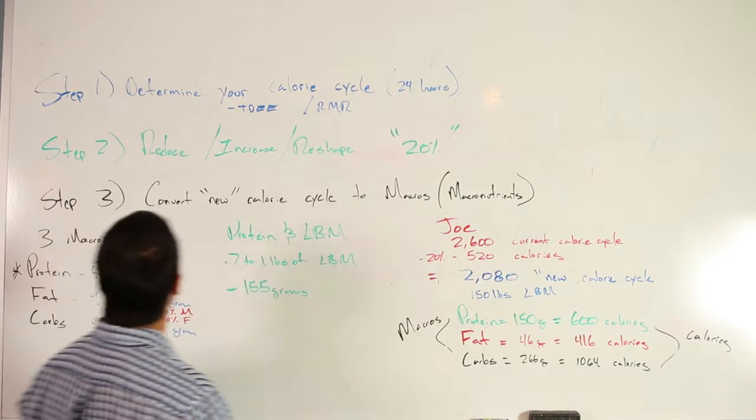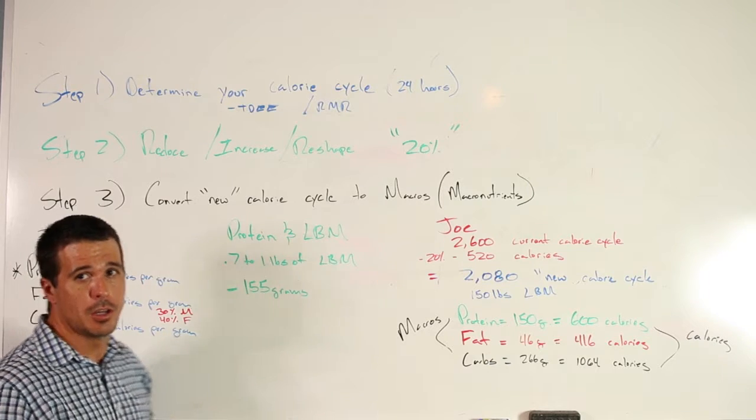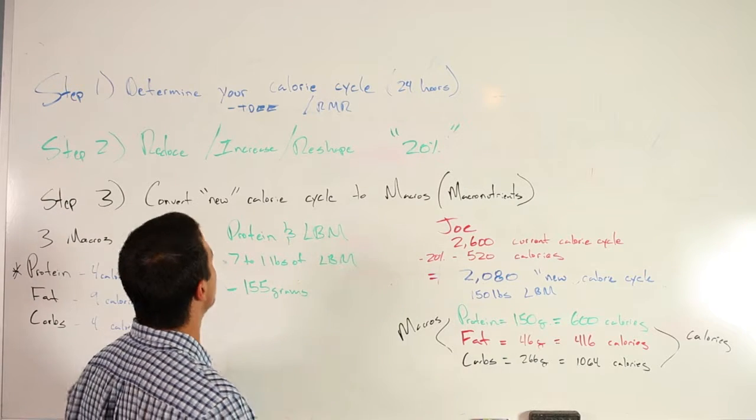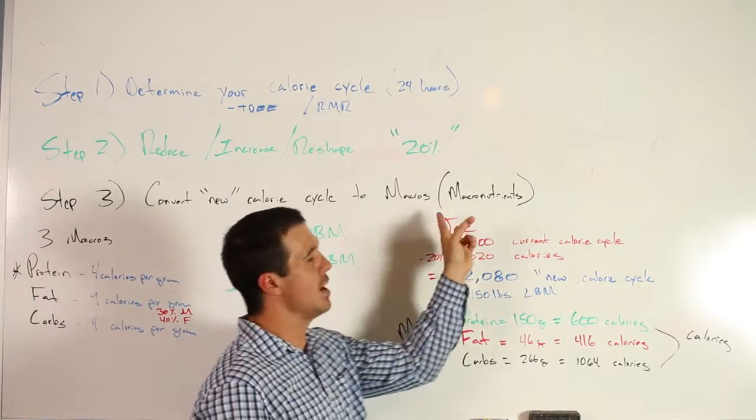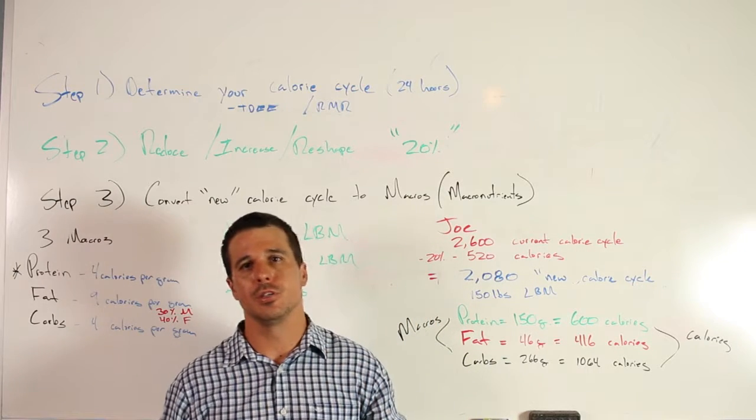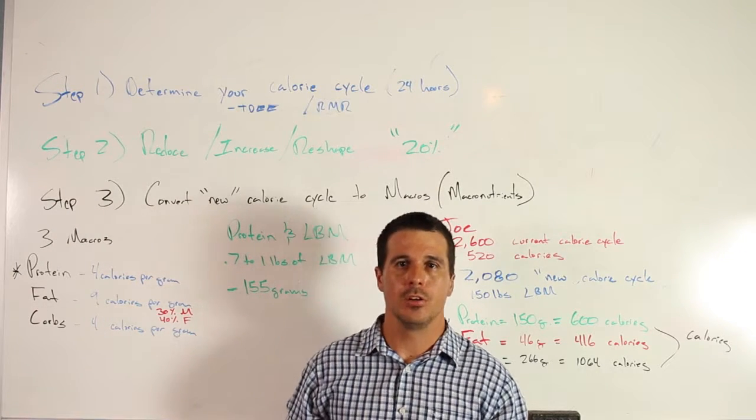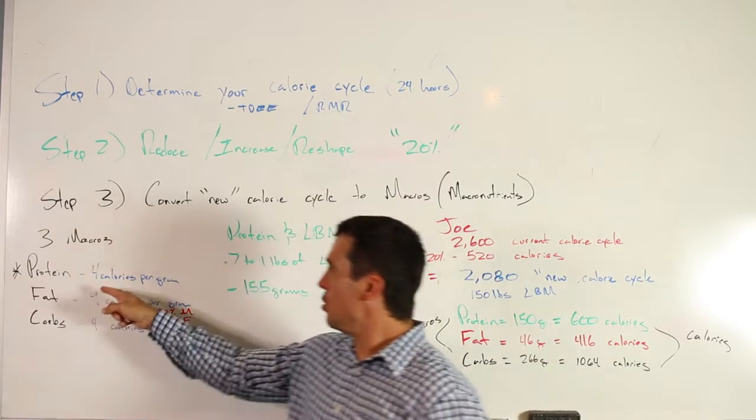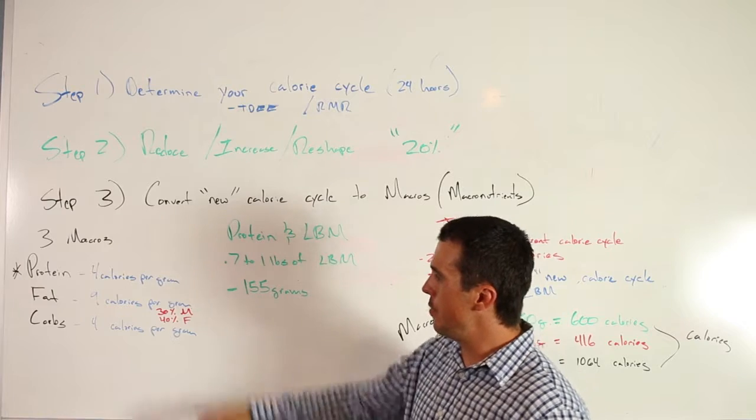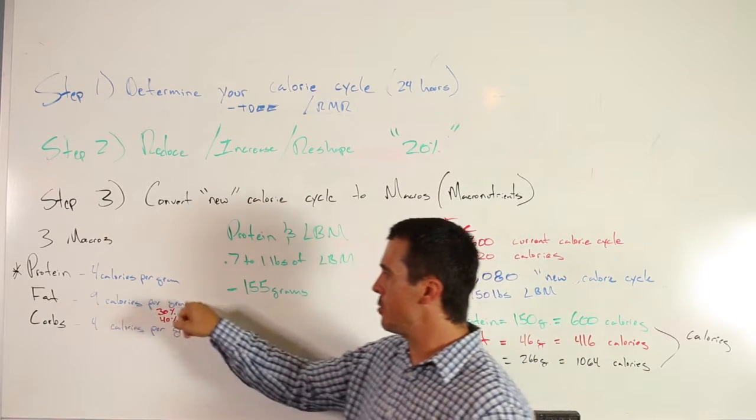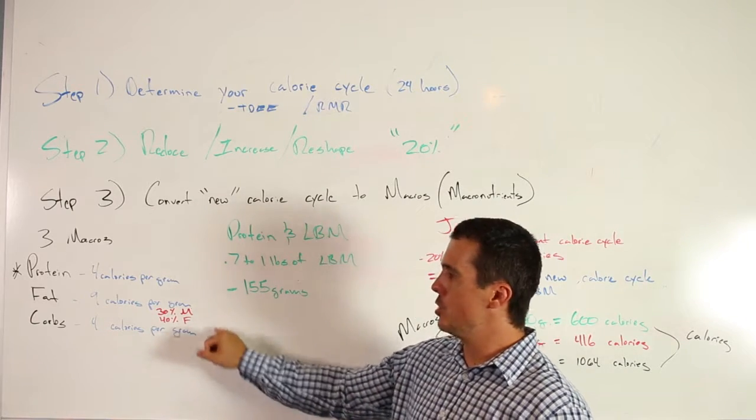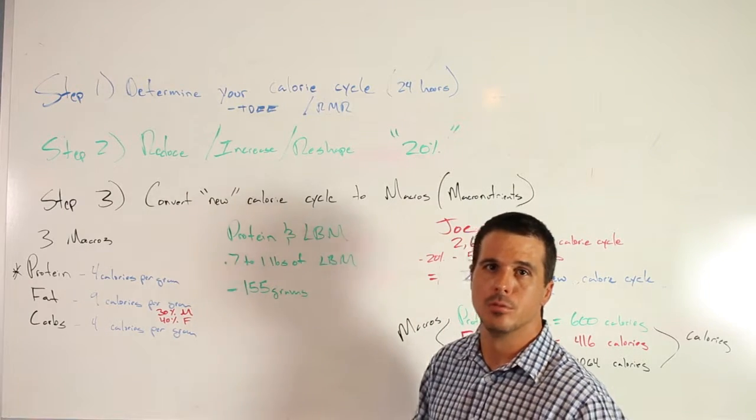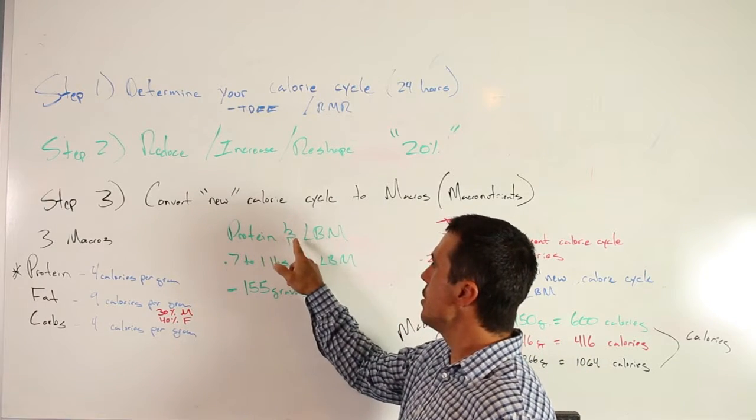Now we get into the nuts and bolts of calories and macros and how they work with one another. Once you've determined your current calorie cycle, you need to convert this into macros. What are macros? Macros are your macronutrients - there's three: protein, fat (good fat), and carbs. All three have a calorie per gram ratio. Protein has four calories per gram, fat has nine calories per gram (it's the highest in calories per gram ratio), and carbs also have four calories per gram, just like protein.